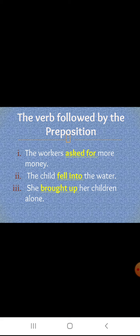Now, verbs followed by preposition. 'The workers asked for more money.' Here 'asked' is a verb and 'for' is a preposition. 'The child fell into the water.' Here 'fell' is a verb and 'into' is a preposition.